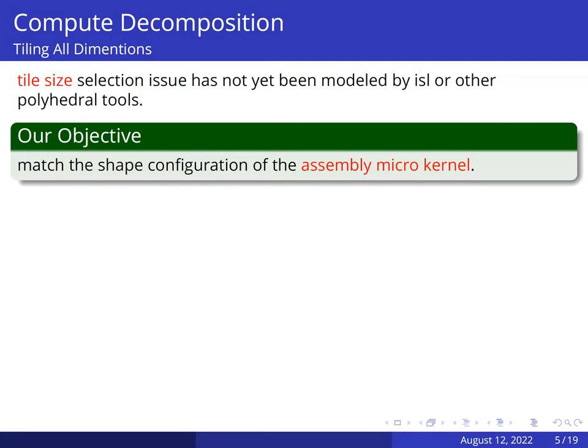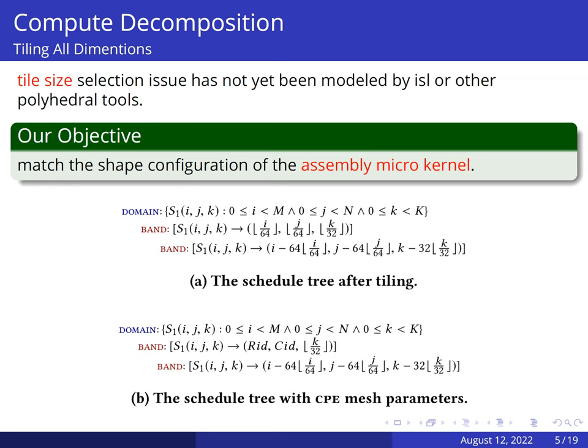The objective of our analytical model is to match the configuration of the assembly microkernel. The best performing microkernel of matrix multiplication on Sunway processor is configured as 64×64×32. So, we use this fixed tile size and get a schedule tree as shown in figure A. Then we substitute the first two integer divisions in the outer band node using column id and row id for hardware binding. Then we will get a schedule tree as shown in figure B.